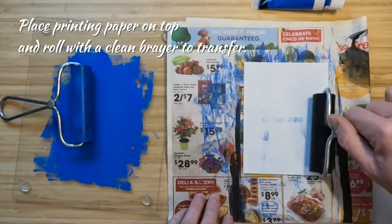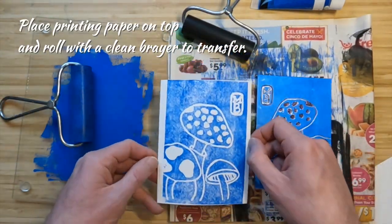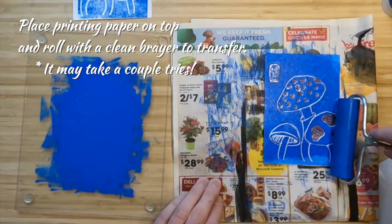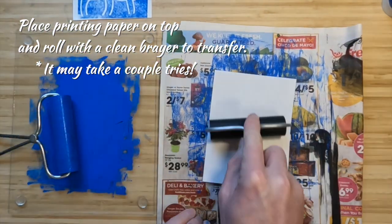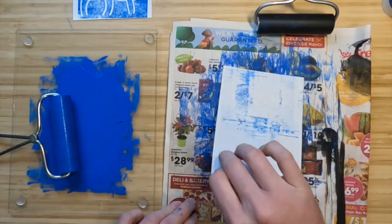Place a piece of printing paper on your foam plate and roll the back with a clean brayer. It may take a couple of tries to get a print you like. Perhaps try making two prints without reapplying ink in between.